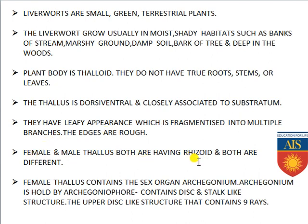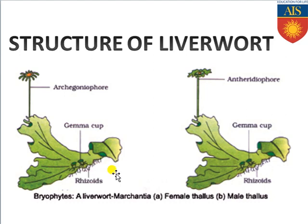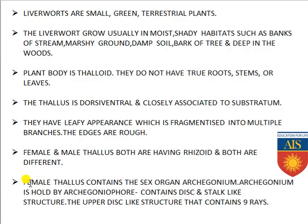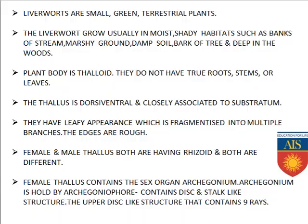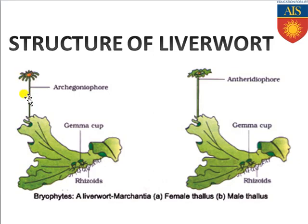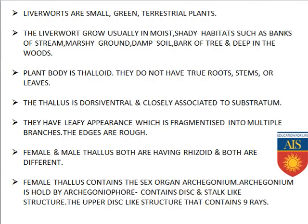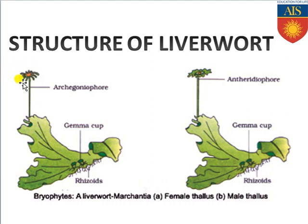Both female and male thallus have rhizoids, and both are different — male and female thallus cannot survive on the same plant body. The female thallus contains the sex organ archegonium, held by a stock-like structure called archegoniophore. The disc-like structure on archegoniophore contains nine rays. The male thallus contains the sex organ antheridium, held by the antheridiophore.